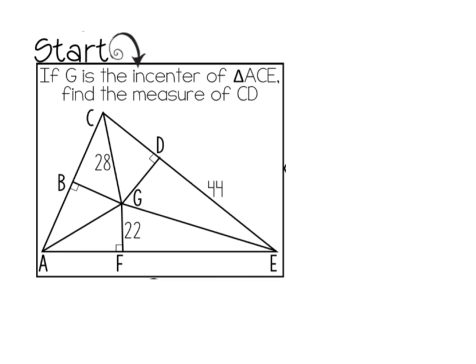G is the incenter of triangle ACE. Find the measure of CD. So I'm looking for this value right here. I know that my angles are congruent, but all of these have side measures. My angles are bisected, but all of these values here are side measures.